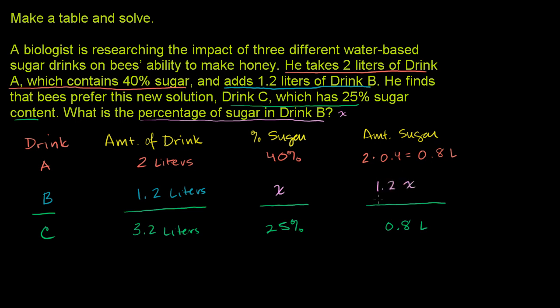Now, let's think about it. We have 0.8 liters of sugar in Drink A. And when you add this amount to it, you still have 0.8 liters of actual sugar in Drink C. So this thing has to be equal to zero. We could set up an equation here. We could write 0.8 plus 1.2x is equal to 0.8.